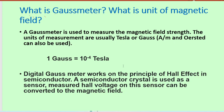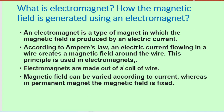What is an electromagnet and how is the magnetic field generated? An electromagnet is a type of magnet in which the magnetic field is produced by an electric current. According to Ampere's law, an electric current flowing in a wire creates a magnetic field around the wire, and this principle is used in electromagnets, which are made from a coil of wire. The magnetic field can be varied according to the current, whereas in permanent magnets the magnetic field is fixed.